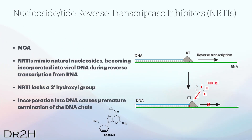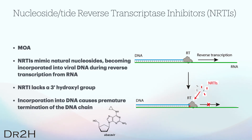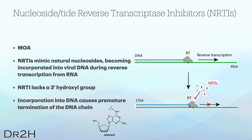For NRTIs, they all look like or mimic natural nucleosides or nucleotides, which are the building blocks of DNA. When a cell uses NRTIs, these drugs are taken up by the reverse transcriptase enzyme and incorporated into the growing viral DNA chain. Once an NRTI is incorporated, it lacks a 3' hydroxyl group, which is necessary for the addition of the next nucleotide. As a result, the addition of subsequent nucleotides is inhibited, the elongation of the DNA chain is terminated, and the completion of viral DNA synthesis is effectively prevented, therefore inhibiting replication of the virus.